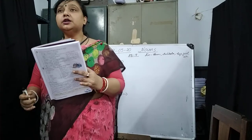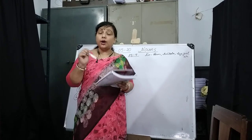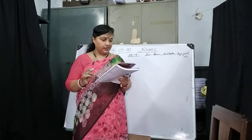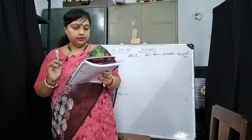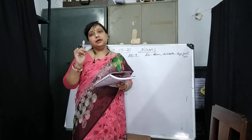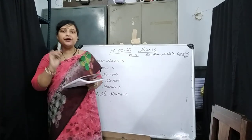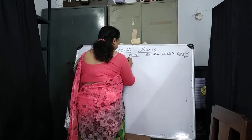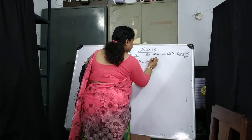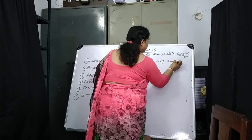Common nouns. What are common nouns? Common nouns are the common names of persons, places, animals, or things which are of the same kind. For example: boy, girl, city, country, etc.